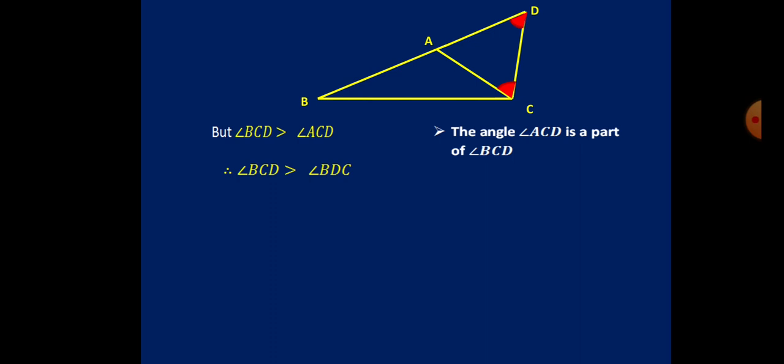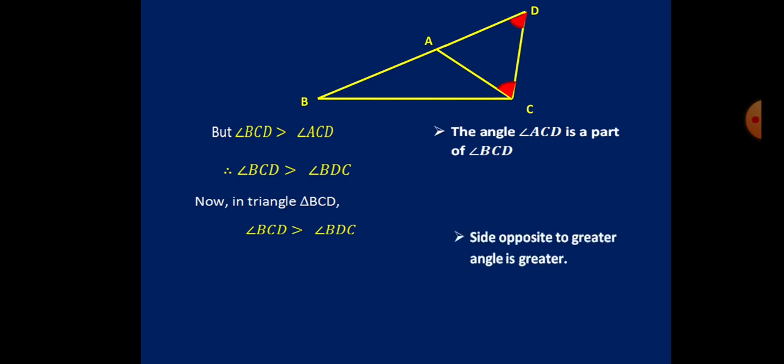Now look at the whole triangle BCD. The angle BCD is greater than angle BDC. From our previous theorem, the side opposite to the greater angle is always greater. Here the greater angle is BCD, and its opposite side is BD. So BD must be greater than BC. But BD can be represented as BA plus AD, and AD is replaced by AC as per our construction.